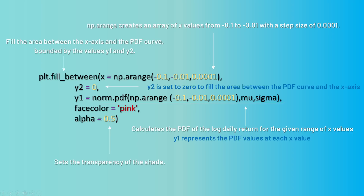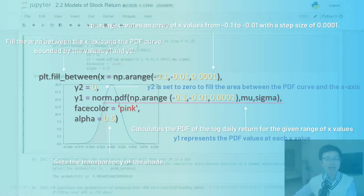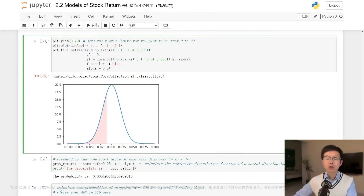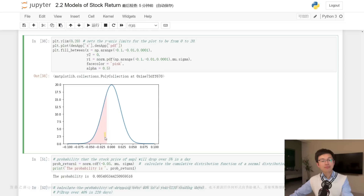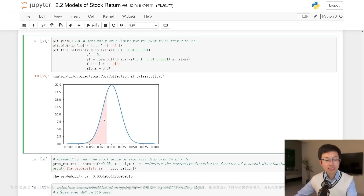norm.pdf calculates the PDF of the log daily return for the given range of x values. The plt.fill_between function is used to fill the area between the x-axis and the PDF curve bounded by the values y1 and y2. y1 represents the PDF values at each x value, while y2 is set to zero to fill the area between the PDF curve and the x-axis. The facecolor parameter sets the color of the shaded area, while the alpha parameter sets the transparency of the shading.